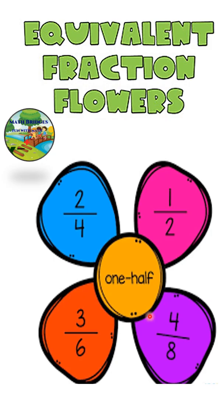To do this activity, first you draw a flower of your choice. We will take one half. In the center, you can write one half. So in one of the petals, you write 1 by 2. Now, what is the equivalent fraction of 1 by 2? Multiply numerator and denominator by 2.